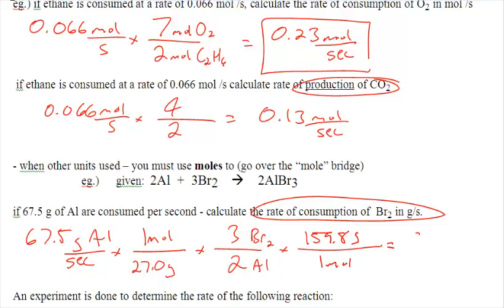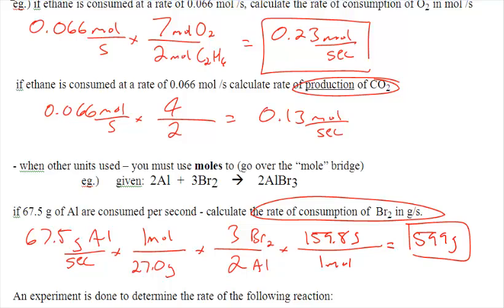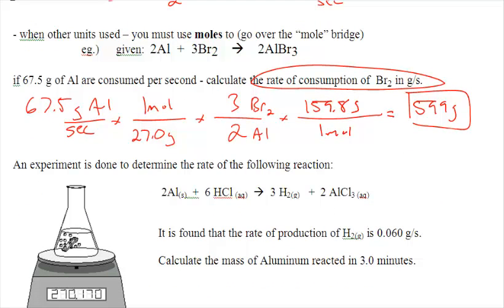Which is whatever Br is times 2. It should give us 159.8 grams per one mole. And that is going to give us the final answer: 599 grams. So there is a grams to grams question through the mole bridge. And we are going to do this one tomorrow as a group.